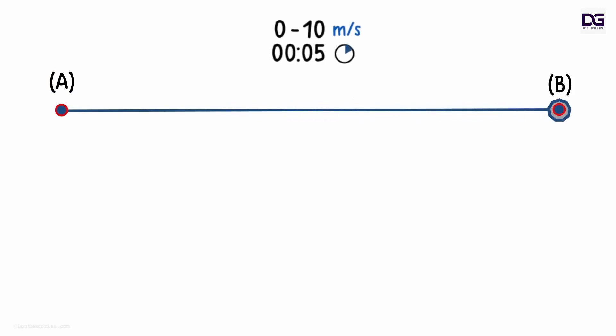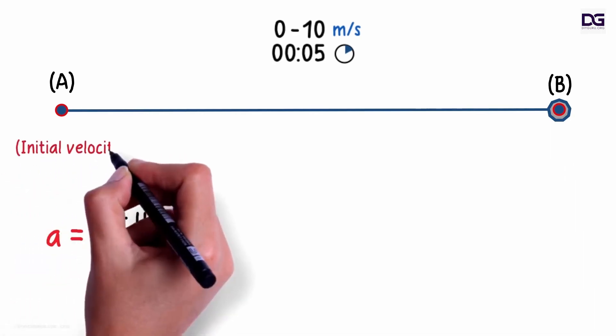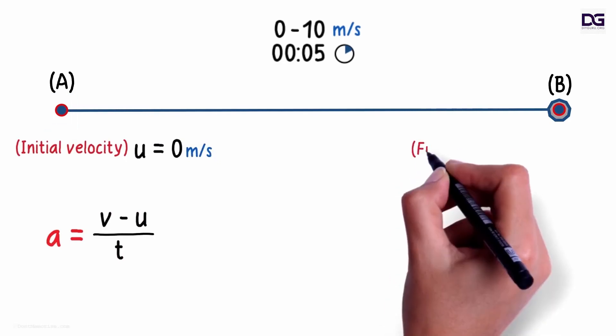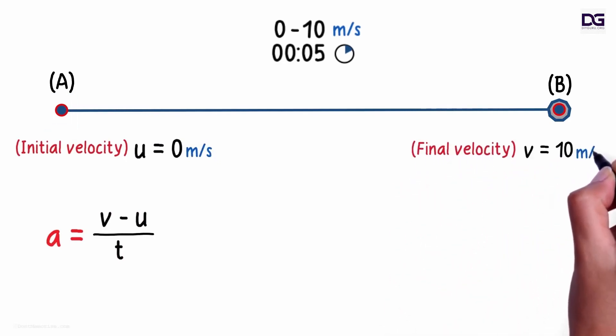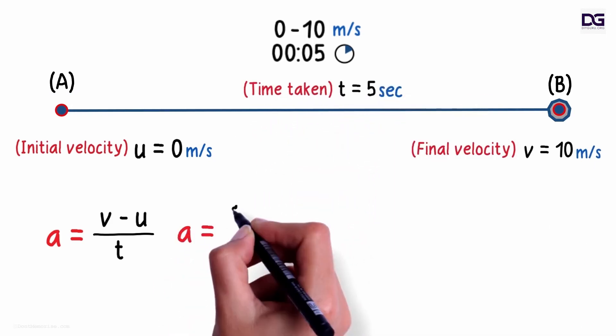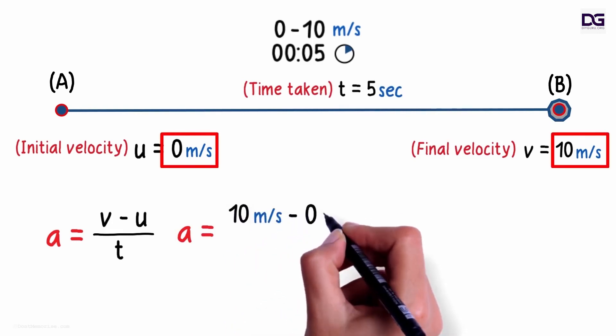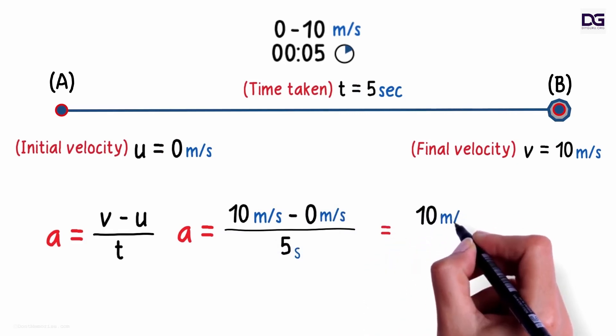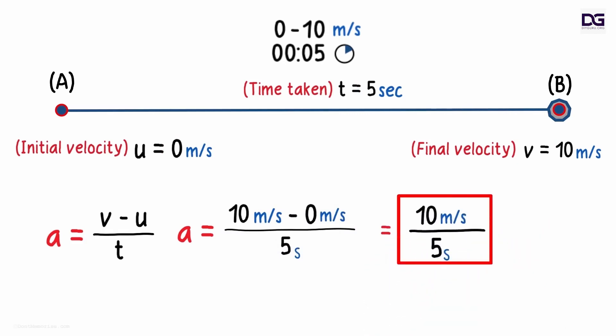What will be the acceleration here at point B? We can look at the formula to get the answer. The initial velocity u is 0 meters per second as the object is stationary. The final velocity v is 10 meters per second and the time taken t is five seconds. Hence the acceleration a will equal 10 meters per second minus 0 meters per second divided by five seconds. So this will equal 10 meters per second divided by five seconds. 10 divided by 5 is 2.